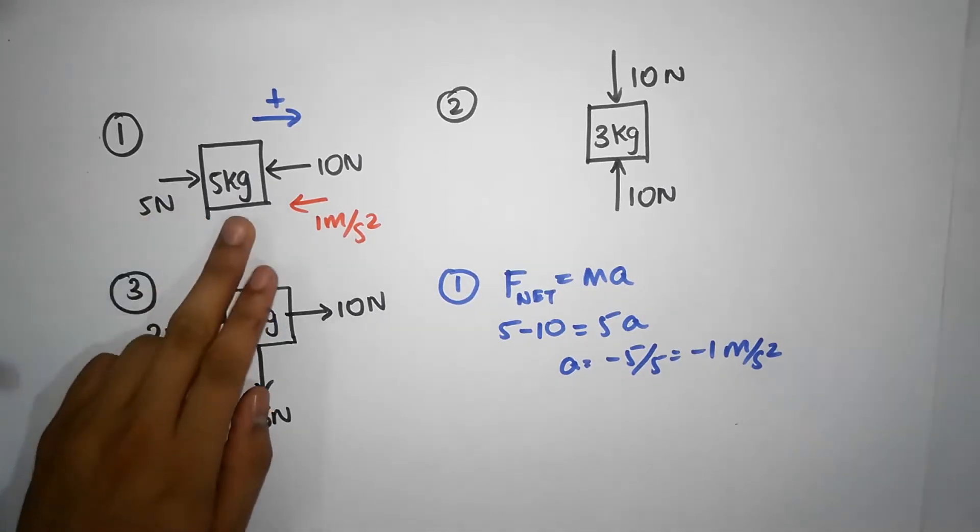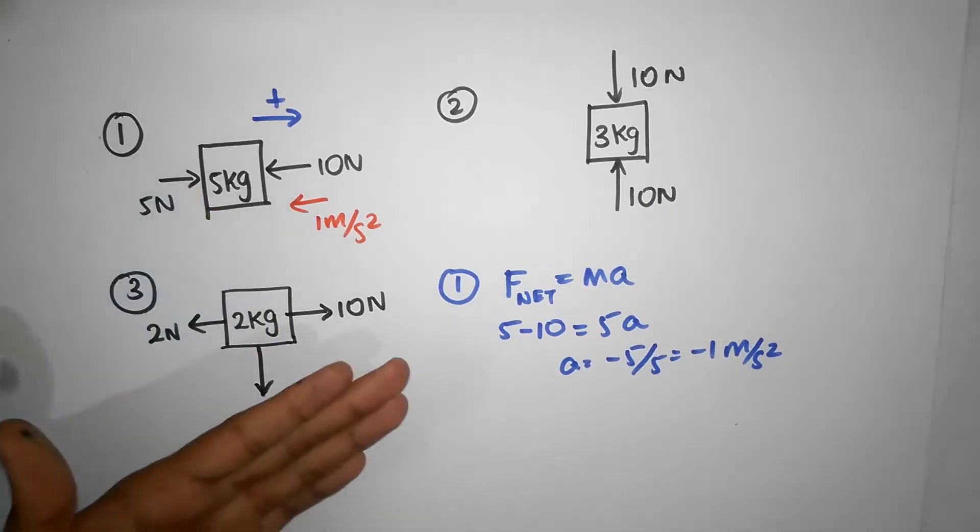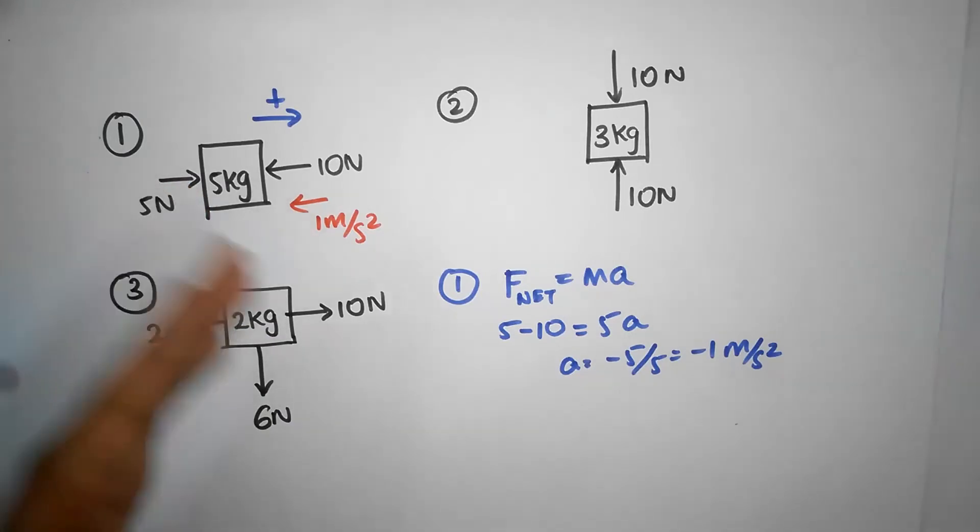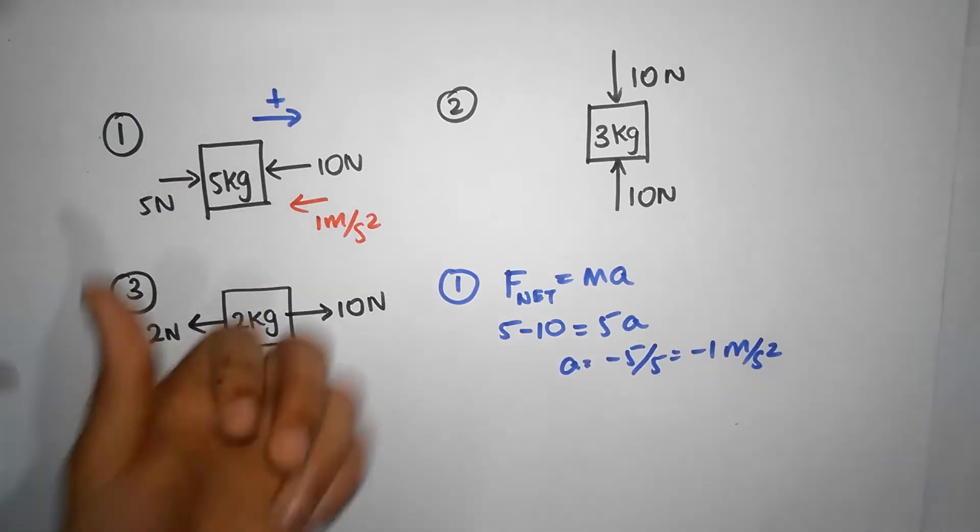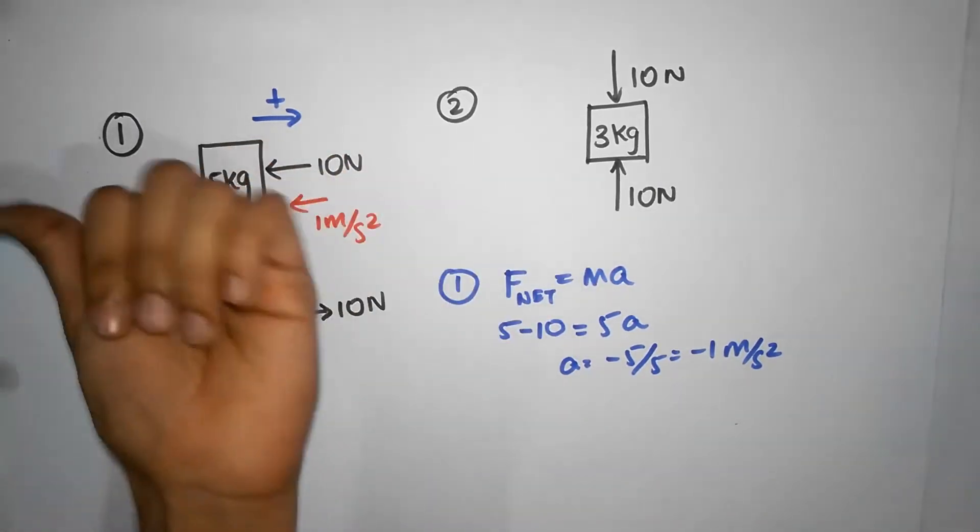First law tells you that this object would move in a direction, and that depends on its velocity before this instance. So, if it was initially moving this way, it would continue to move and speed up in this direction.